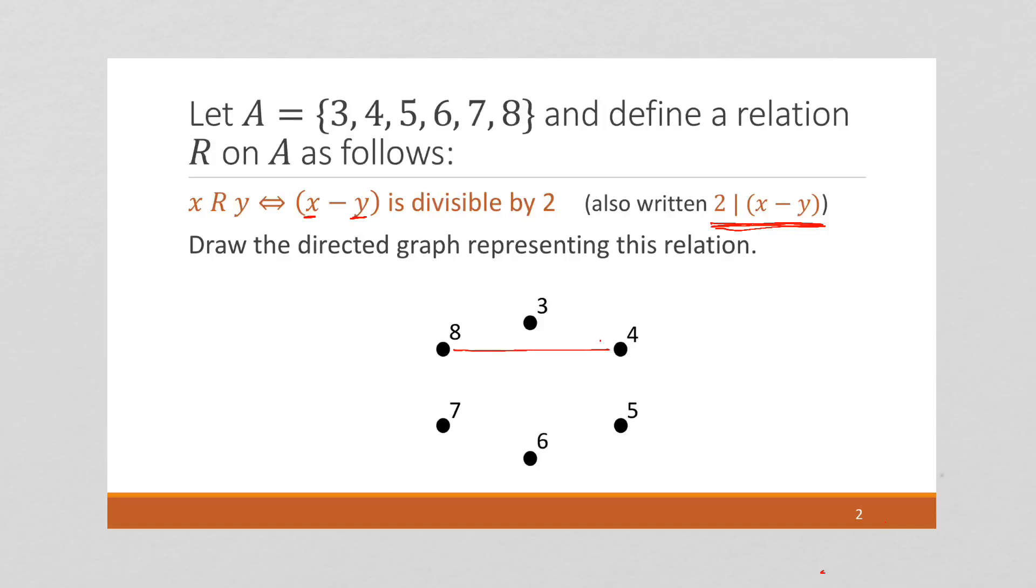if you want to do a single line with an arrowhead on each end to denote a relation that goes both ways, I'm okay with that. But I'm not okay with you just having a line, right?